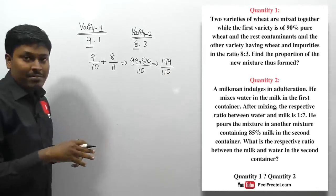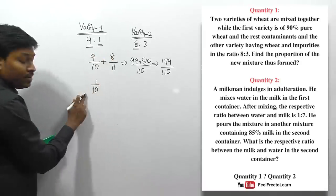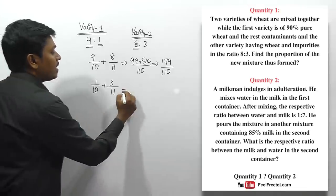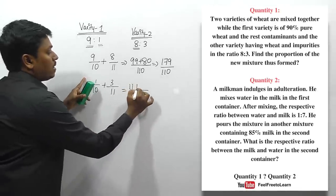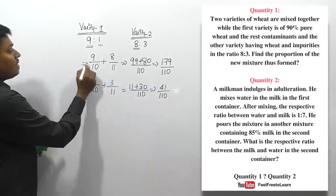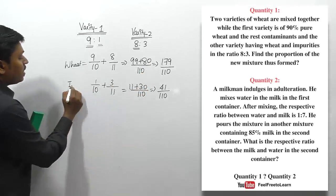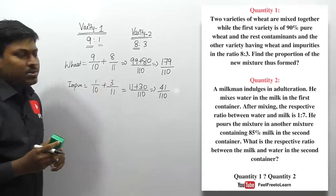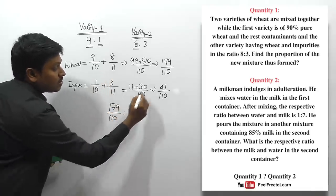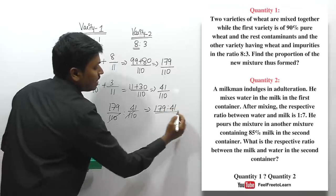For impurities: 1/10 gives 11/110 and 3/11 gives 30/110, total impurities = 41/110. So wheat to impurities ratio in the new mixture is 179:41. This is the answer for quantity number one: the ratio is 179 is to 41.